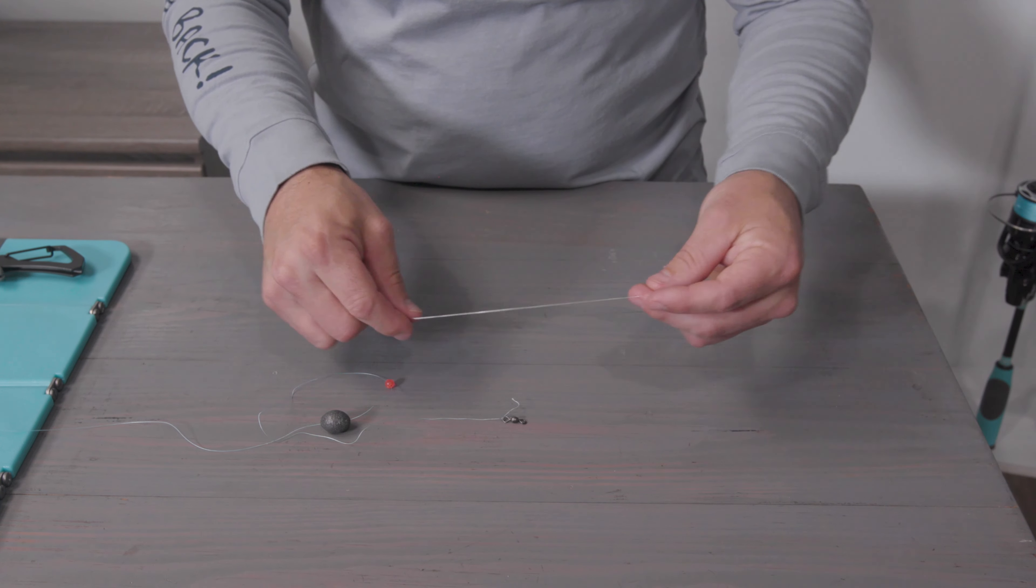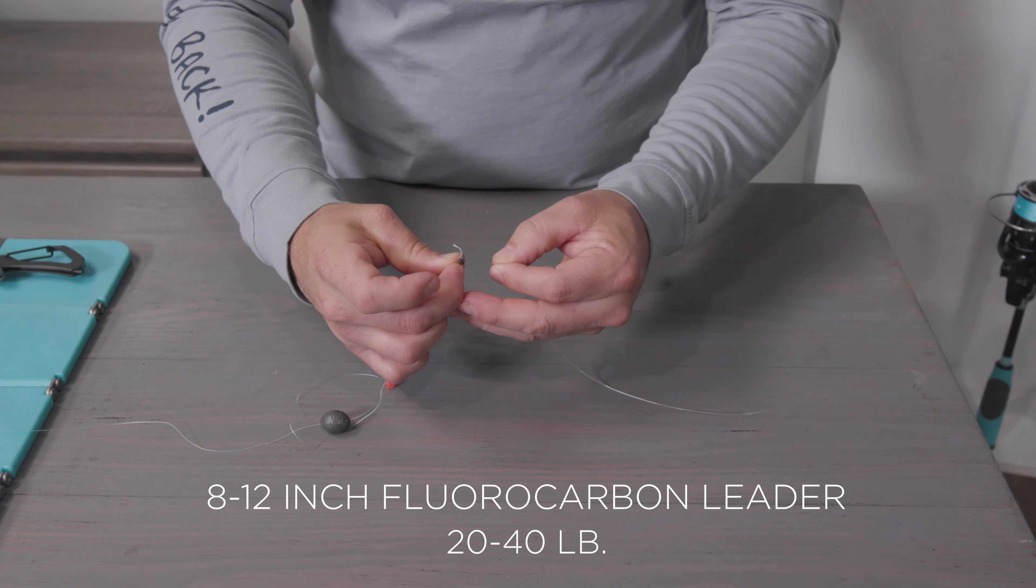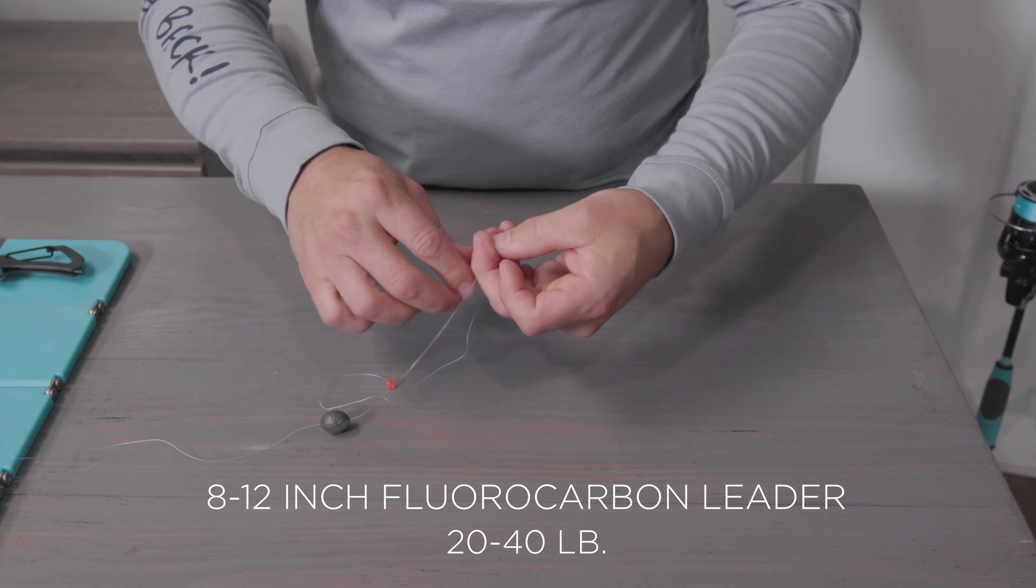Step number four: you want to apply an 8 to 12 inch fluorocarbon leader, 20 to 40 pound.